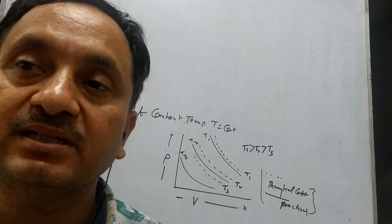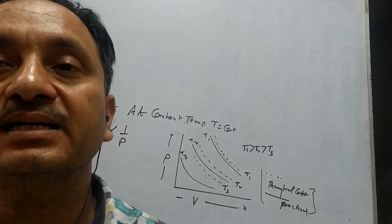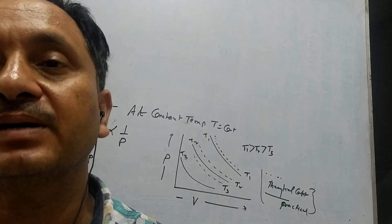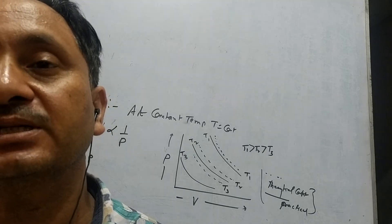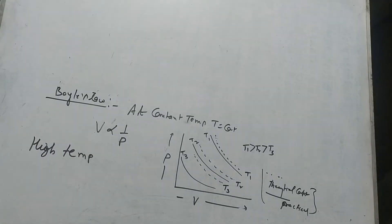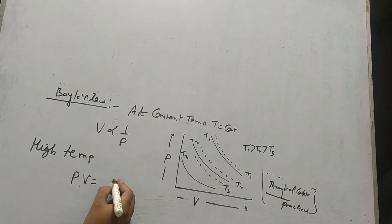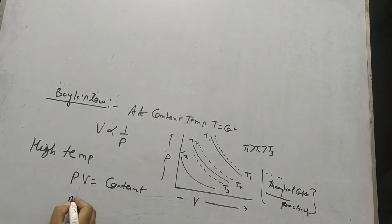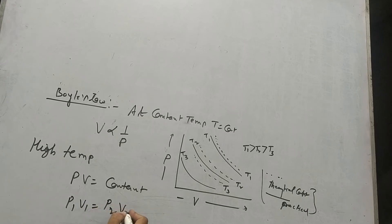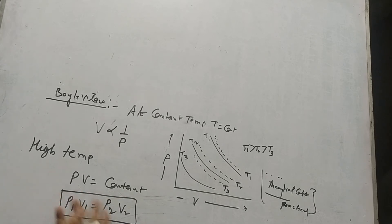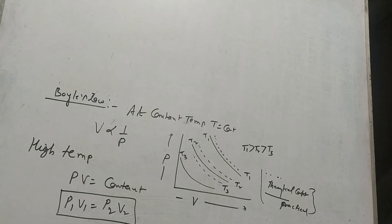Now we move to Charles's law. But first, to summarize Boyle's law: V is inversely proportional to P, so PV equals constant, or equivalently P1V1 equals P2V2. This is analogous to an isothermal process, which we will discuss further when we talk about thermodynamic processes.